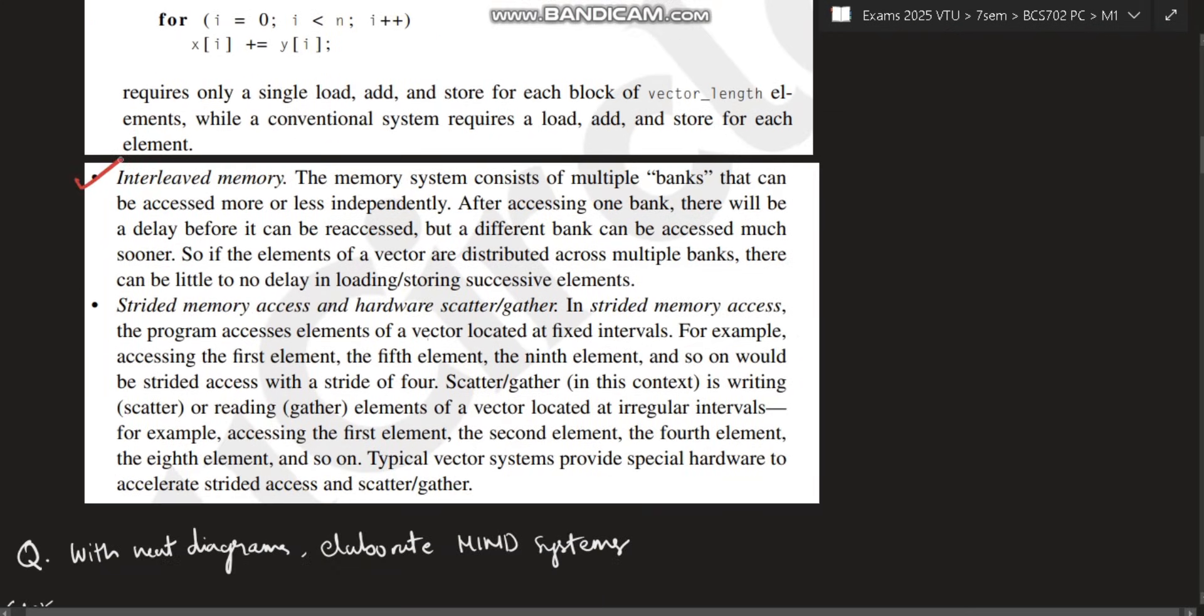Next is interleaved memory. The memory has multiple banks that can be accessed more or less independently. Many different partitions are there where the data will be stored, and each can be accessed independently. After accessing one bank, there will be a delay before it can be reaccessed, but a different bank can be accessed much sooner. You got the point? If there is a bank, you access this for some data, then to access it again there will be some delay. But meanwhile, you can access any other bank in the same time.